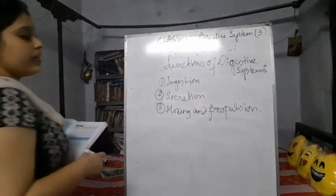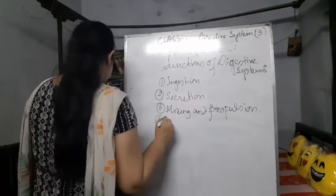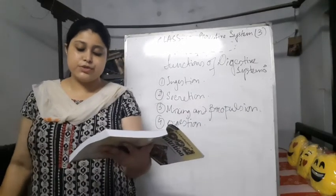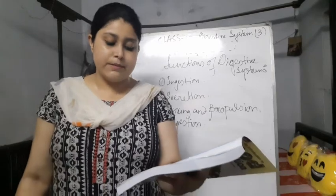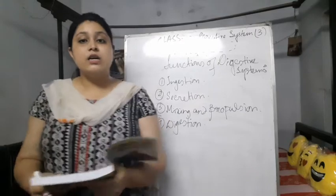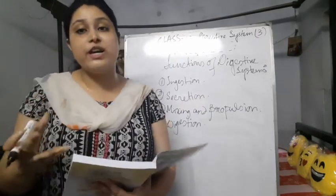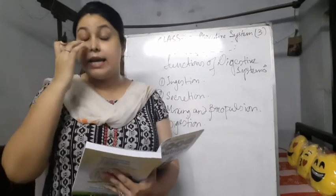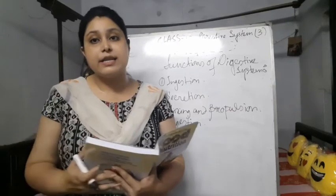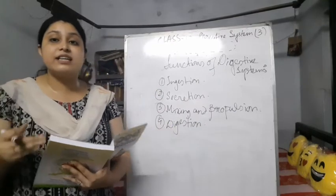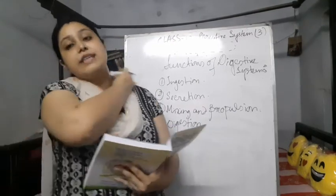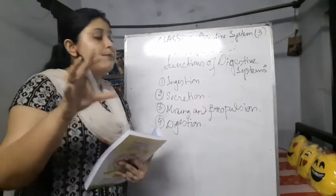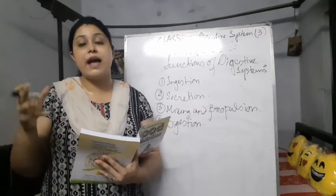The next function is digestion. The main function of this system is to digest food — that is, break complex food molecules into simpler, smaller, easily absorbable particles that the body can utilize. Our body cannot utilize food in the form we consume it. For example, if you're consuming biryani, a big chicken piece cannot be absorbed by the cells directly. It has to be broken down into simpler form, and only then can these parts be absorbed by our cells.